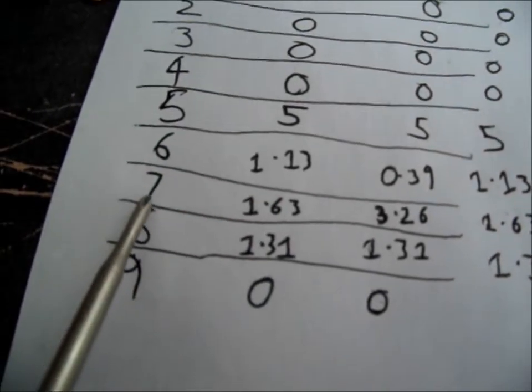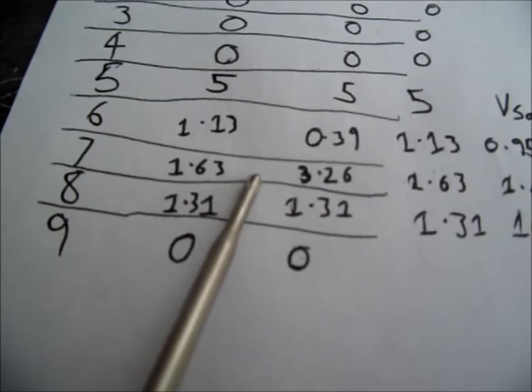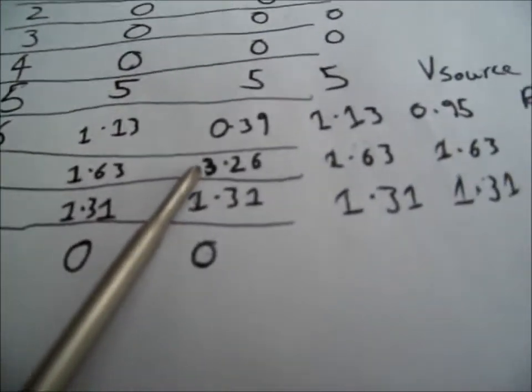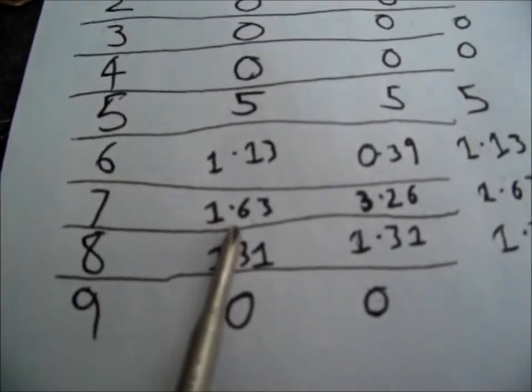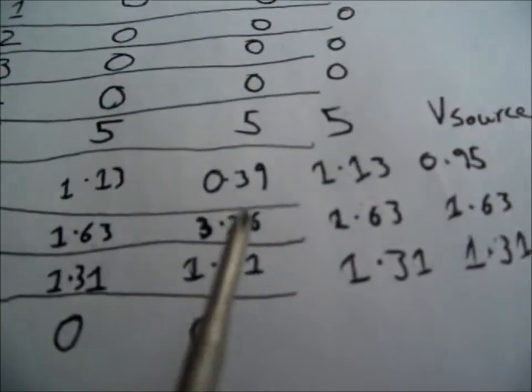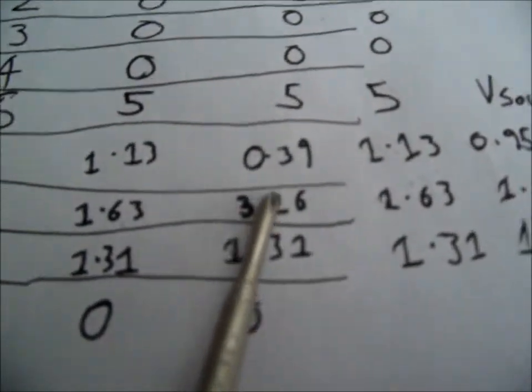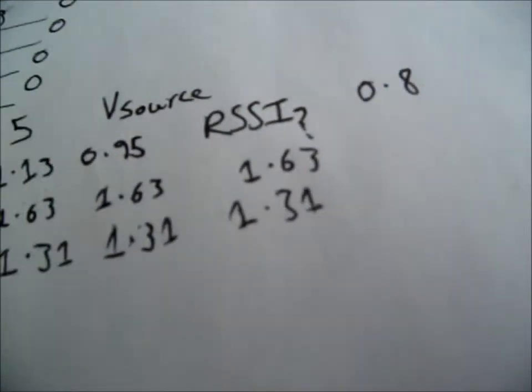And pin 7 seems to be some kind of check that it has signal. Because when it has signal, when it's switched on, it's 1.63V. When it's switched off, it seems to be 3.26V all around that area. And that was continuous throughout the whole thing.